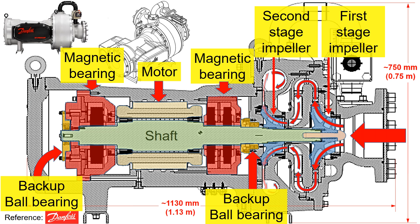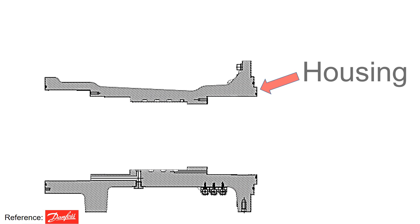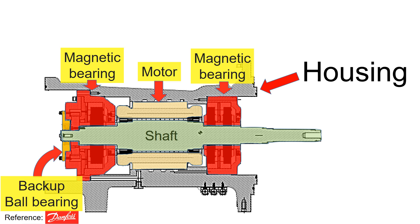Our previous video provided an overview of the compressor layout as shown here. Within this compressor, the housing serves as the main body. It houses key components such as magnetic bearings and the motor.